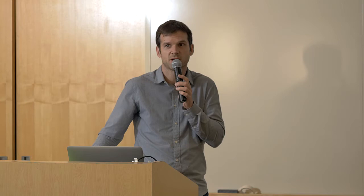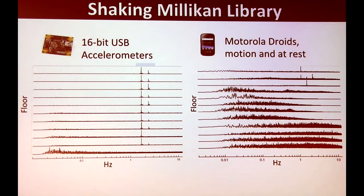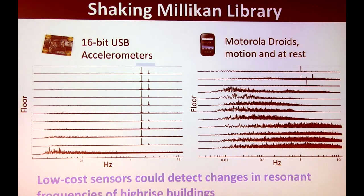We spread devices throughout the Caltech library and shook it from the top using a large shake machine — essentially an oversized washing machine with weights that spin around, generating good amplitude up and down the building. The recording across floors for both USB accelerometers and phones is shown side by side. The USB accelerometers report quite a bit better, but even the phones — not fixed, sort of loose wherever we placed them — still show the wave moving along the library and produce the right frequency spectrums.